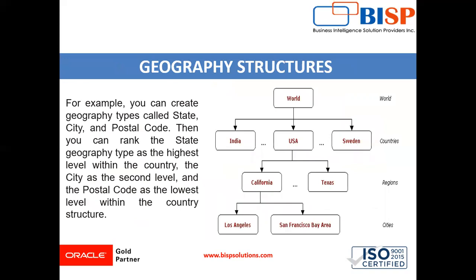To understand geographical structure, consider this example: you can create geography types called state, city, and postal code. You can then rank the state geography type as the highest level within the country, city as the second level, and postal code as the lowest level. In this way, we specify the country structure. We will then create the parent-child relationship, which is called hierarchy.